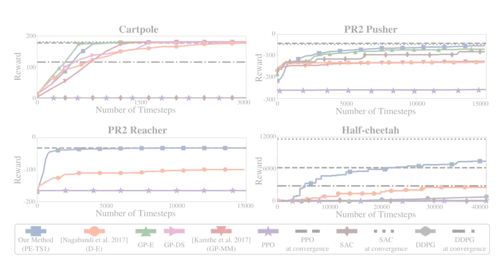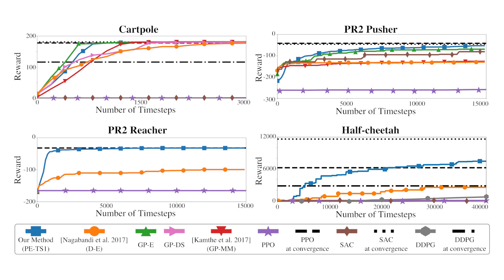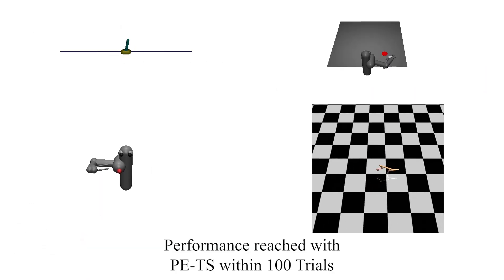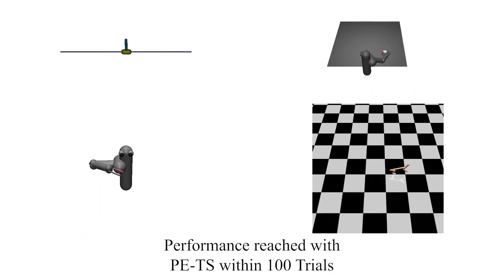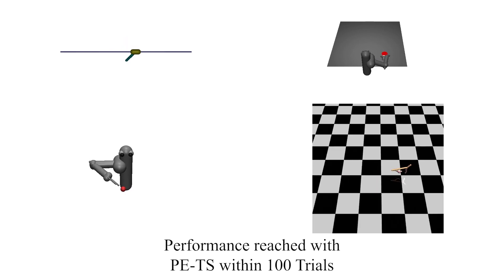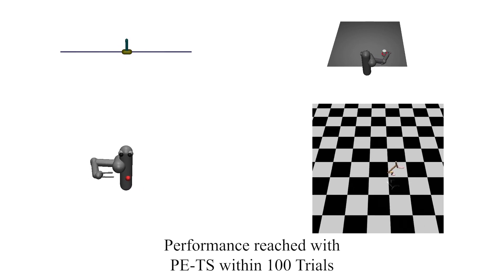In our experiments, we evaluated PETS on several Mujoco benchmark tasks, such as half-cheetah. These experiments show that PETS successfully outperformed several model-free methods, including DDPG and PPO, in terms of asymptotic performance while using up to 15 times less data.